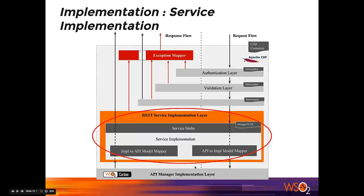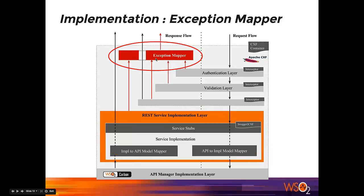The exception mapper is another CXF feature that maps exceptions into proper HTTP response status codes and payloads. For example, if you are writing a custom authentication handler and need to send a 401 in case of an authorization failure, you just throw an application exception with 401 as the status code and the proper payload. The exception mapper will build the response with the payload and status code and send it back to the client.